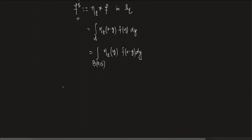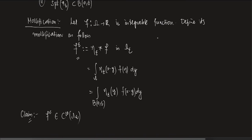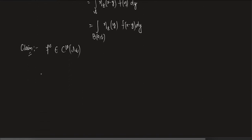Our claim is that f_ε ∈ C∞(Ω_ε). So f_ε, defined by this mollification, is infinitely differentiable. Note that f itself is not infinitely differentiable — it is just an integrable function. But once you perform this mollification, the resulting function turns out to be infinitely differentiable.